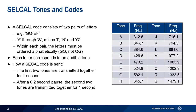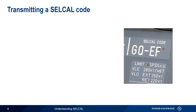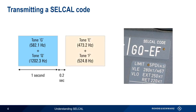Let's work through an example using the code GQ EF. Tones G at 582.1 hertz and Q at 1202.3 hertz are transmitted together for one second. After a 0.2 second pause, we transmit the next pair of tones together: tone E at 473.2 hertz and tone F at 524.8 hertz, again for one second.